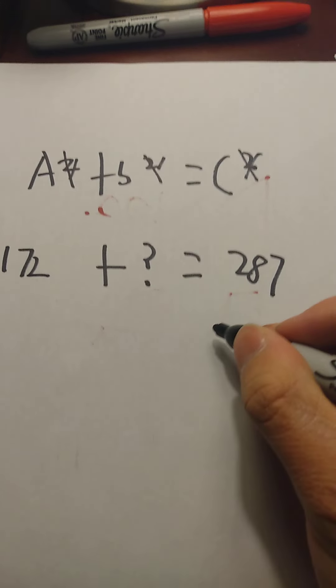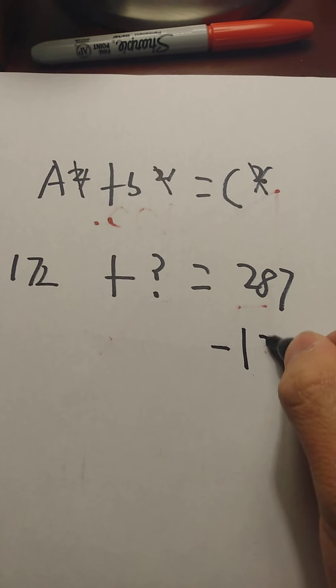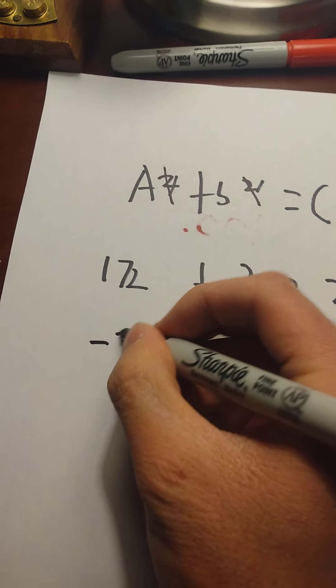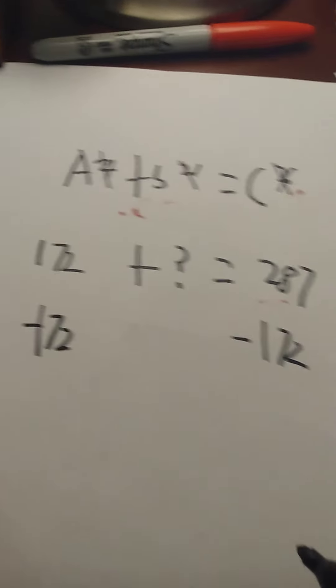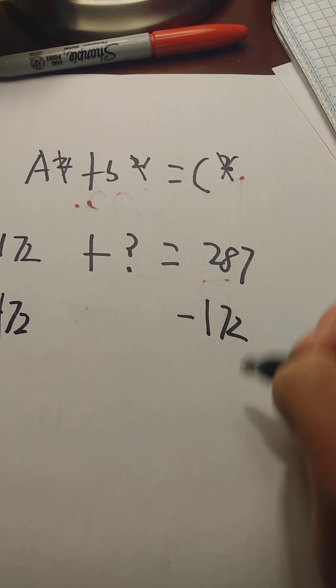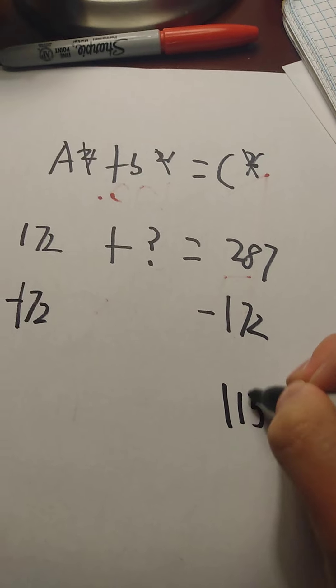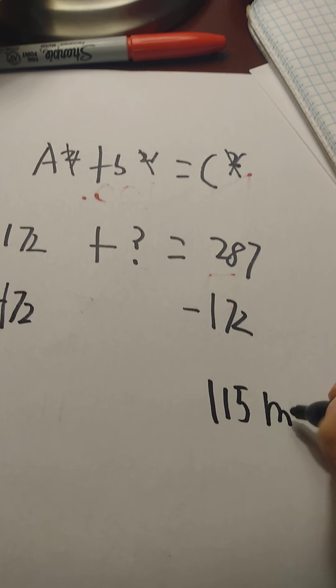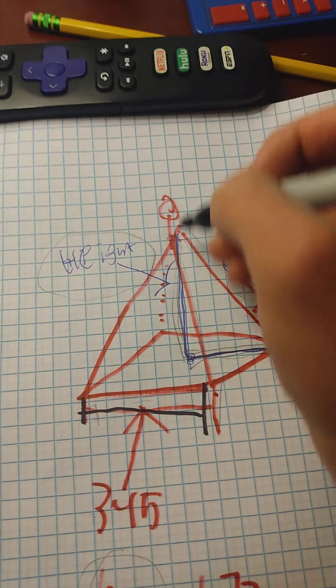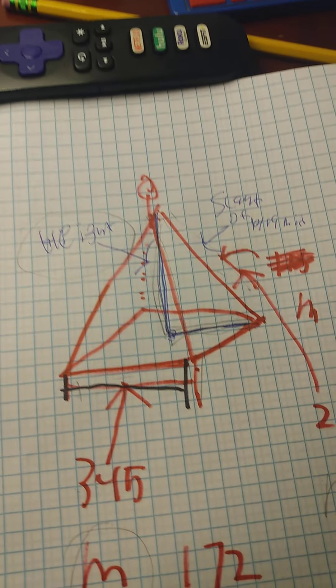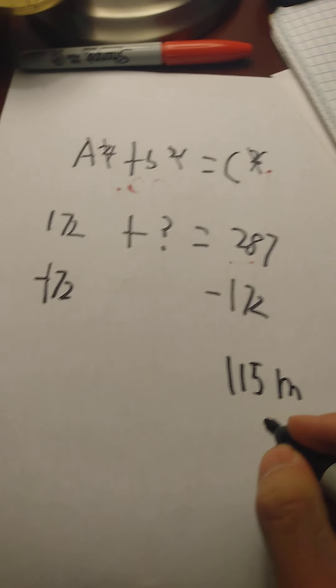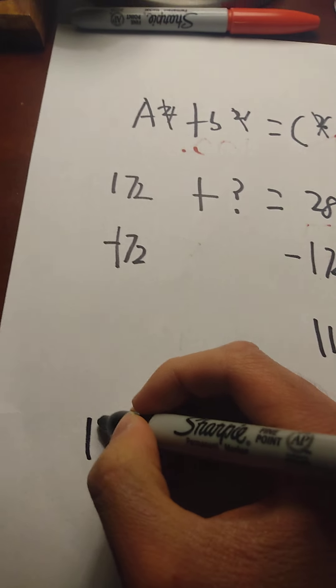So to get the missing number as the height of the pyramid, we have to subtract 172 on both sides. Then, if we do that, we would get 115 meters as the answer for how tall the pyramid height is going to be.